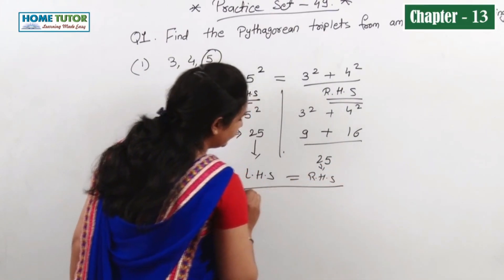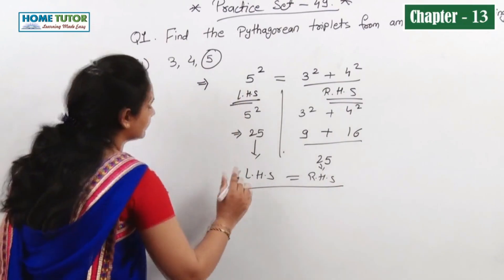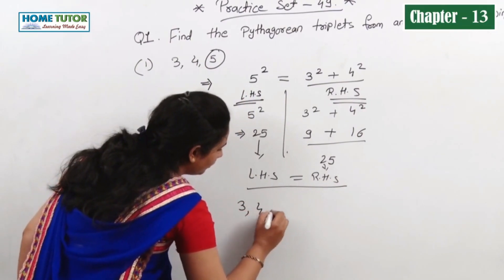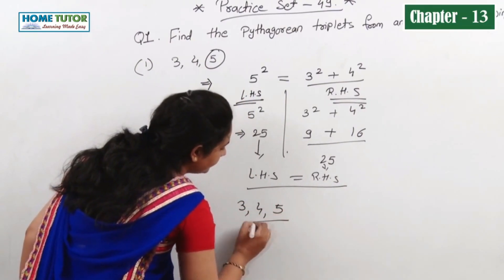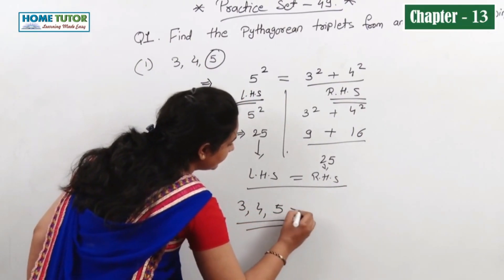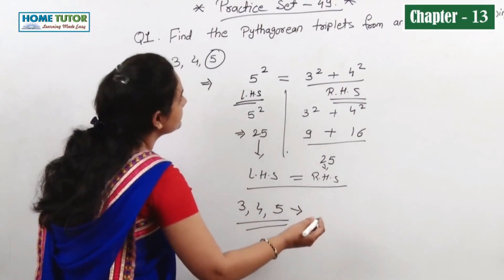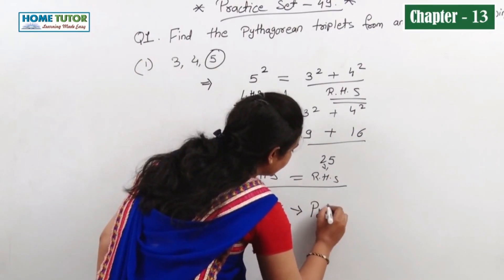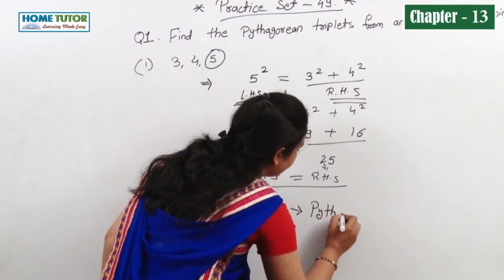LHS equals RHS. This means the given numbers 3, 4, and 5 form a Pythagorean triplet.